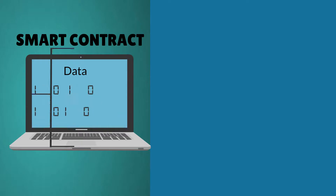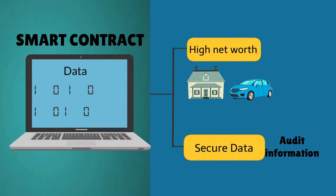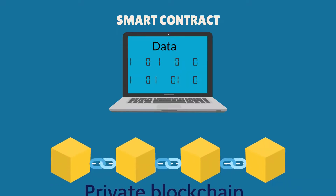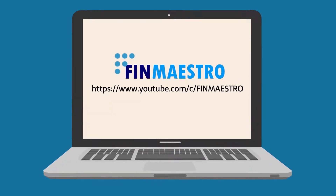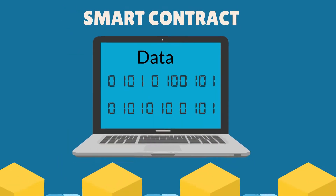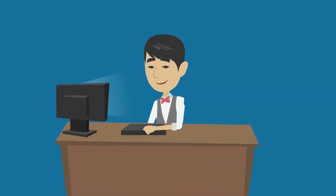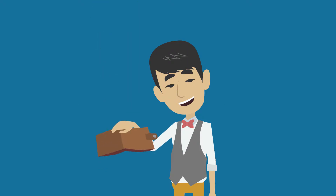Smart contracts can be utilized for processing and storage of assets that have high net worth, and for storing secure data like audit information. Also, private blockchains and cryptocurrencies can be created for storage of data and processing transactions. An example of a private blockchain is: if you have started a YouTube channel and want to attract subscribers, you could program a smart contract that enables subscribers to receive Ethereum for each subscription. When a person subscribes to your channel, a smart contract gets triggered and transfers a certain unit of Ethereum to their wallet.